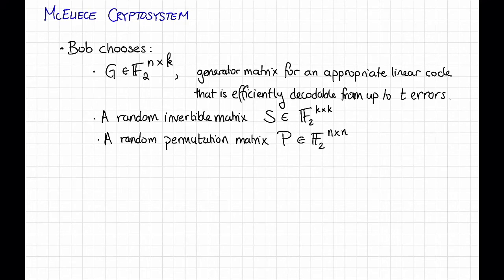That is, P is an n by n matrix with entries 0s and 1s so that when you multiply P by a vector, what it does is it permutes the coordinates of that vector. Another way of saying it is that P has exactly one 1 in every row and every column. Okay, so Bob is going to choose all of these things, and from these, he's going to assemble his secret key and his public key.